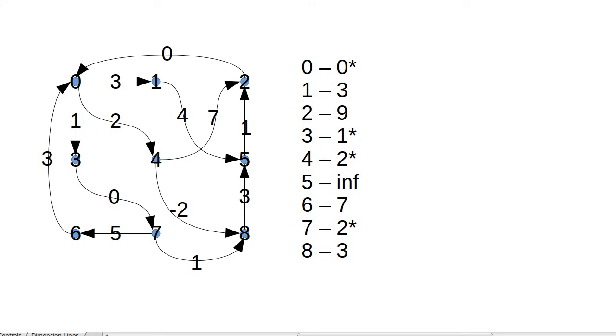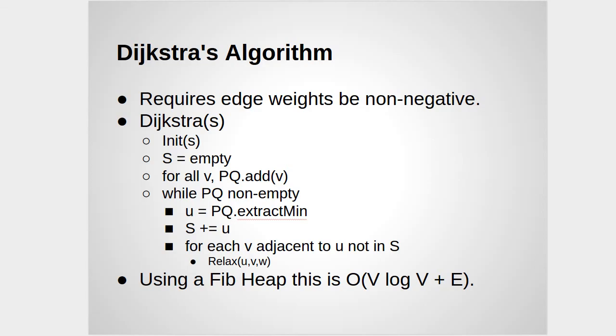In order to get that full performance, though, because you are calling decreased key over and over again, you need to be using a Fibonacci heap. Standard binary heaps don't have a nice ability to decrease key, but when you do, you can get this as V log V plus E, which you will note is better than what we got with Bellman-Ford.